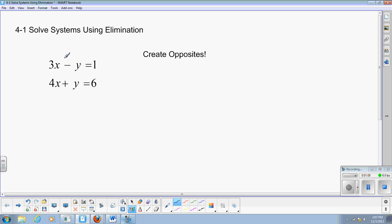We're going to create opposites with variables. And if you're looking at this system, you can see that we actually do have opposites right here. The minus y and the plus y. Those are opposites. So since we already have opposites there, what it allows us to do is just add these two equations together.